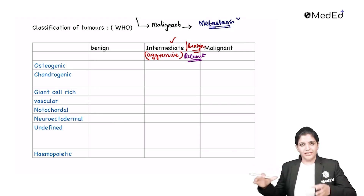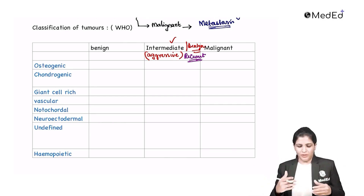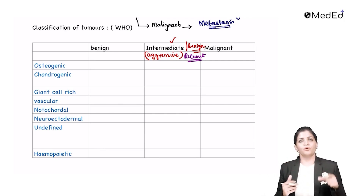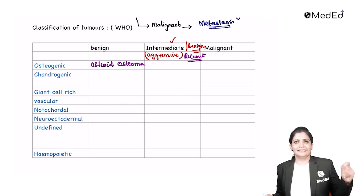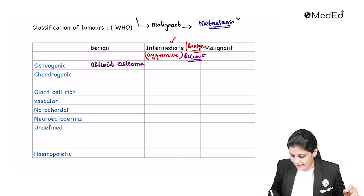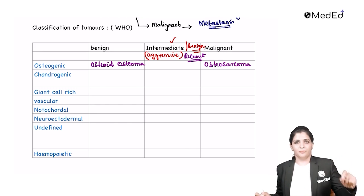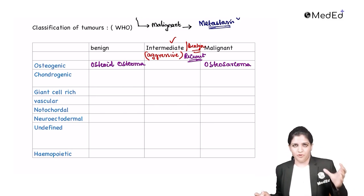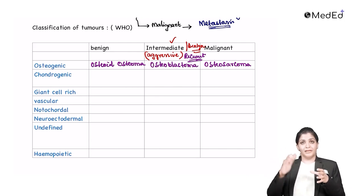Now let us see the various tumors based on cell of origin. First is osteogenic — meaning bone-forming tumors. The benign bone-forming tumor is osteoid osteoma. The malignant is osteosarcoma, the most common malignant bone tumor. On X-rays, increased bone formation can be seen around the tumor. The intermediate aggressive variety is osteoblastoma — also bone-forming but benign and aggressive.